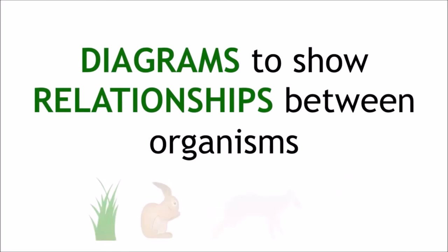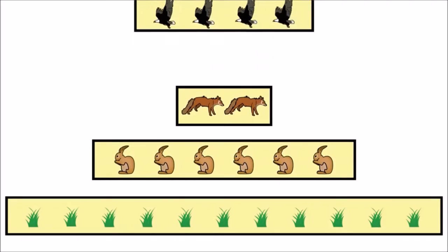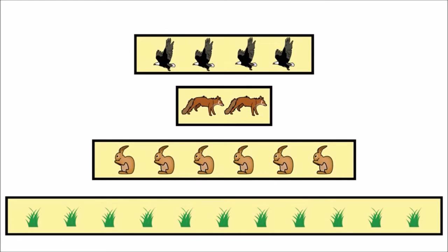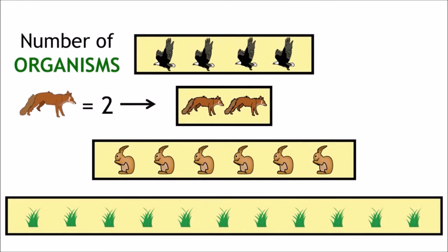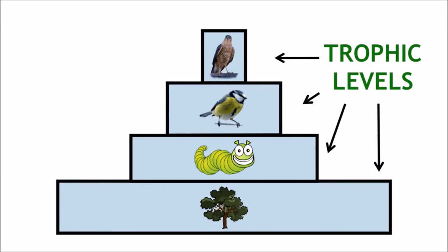and show the relationship between organisms in an ecosystem. They are made up of bars stacked on top of one another. They can be used to show number of organisms or biomass of each trophic level in the ecosystem. They visually describe the quantities that we see in food chains and food webs.